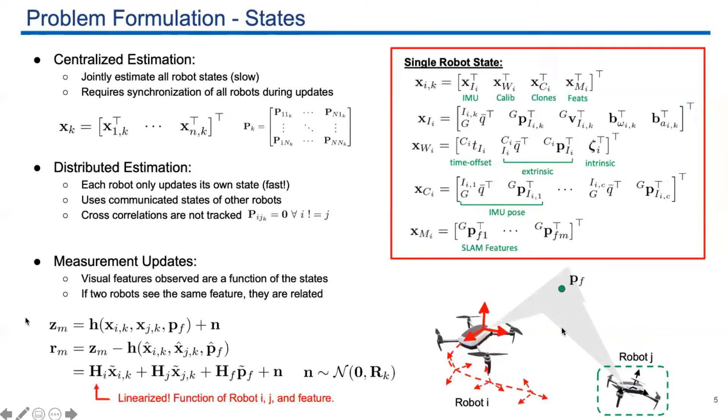Before we talk about the algorithms, we introduce the state vector for each robot. We estimate the IMU state and also the calibration state that includes the time offset and extrinsics between camera and IMUs. We also estimate a sliding window of IMU poses and a window of SLAM features. These features are the ones that can be tracked for a long time. We include its position in the state. But if this feature loses track, we will marginalize it from the state to gain efficiency.